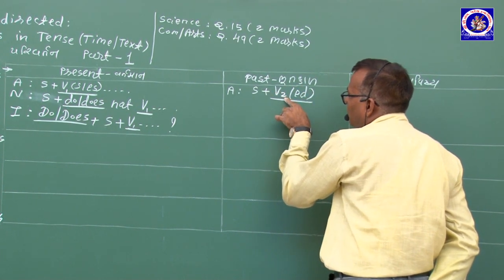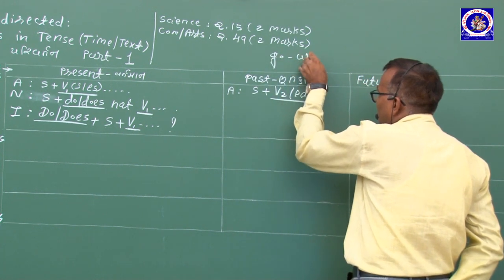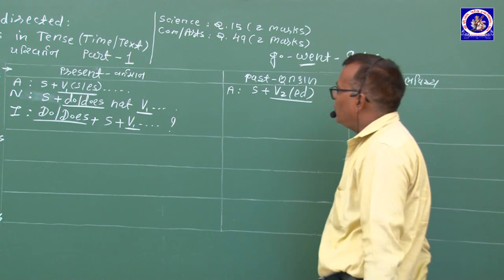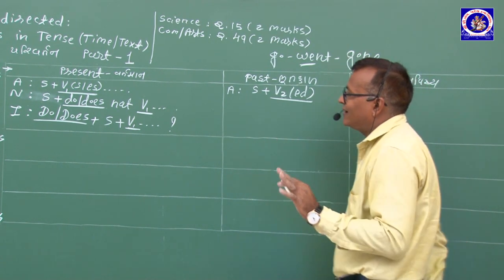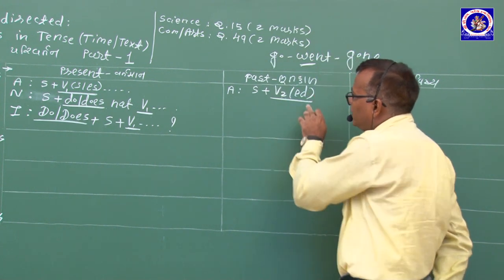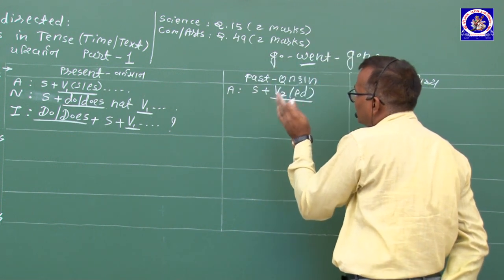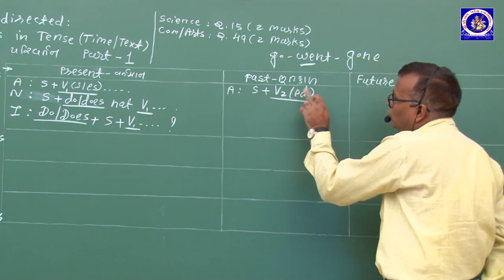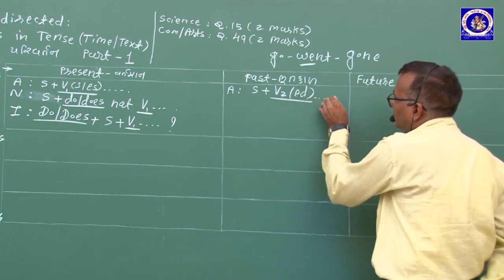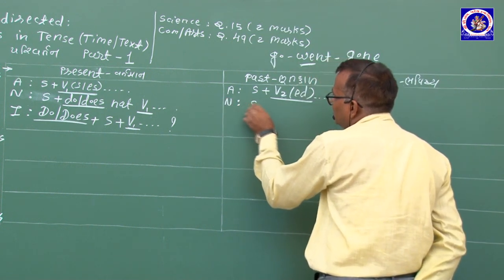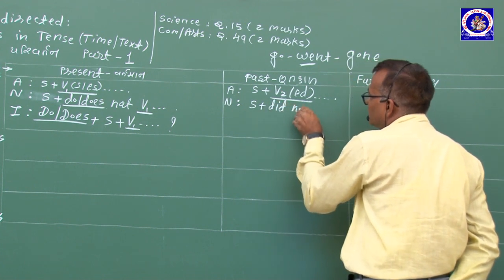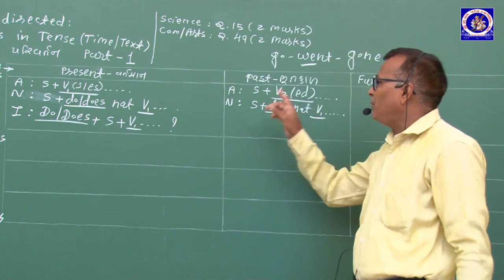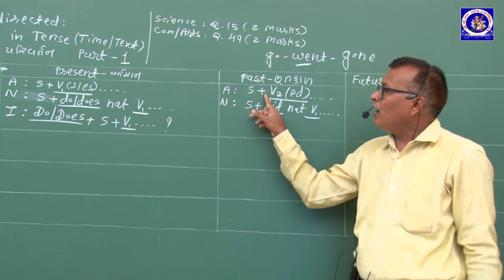Simple Past Tense: Verbના અંતે -ed પ્રત્યય લગાડાય. અપવાદ: Verb જો consonant + y માં પૂરું થાય તો -ied. છેલ્લો અક્ષર double કરીને -ed લગાડવામાં આવે. Irregular Verbs: 2nd form (V2) — Verb table પ્રમાણે.